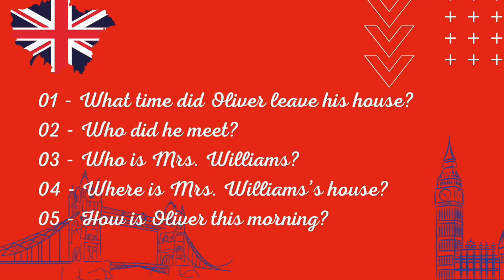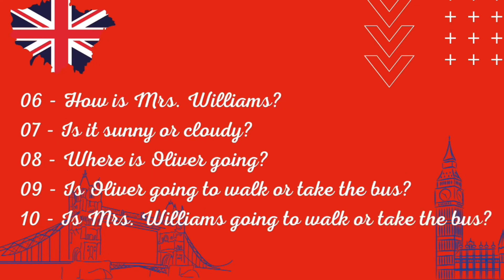One: What time did Oliver leave his house? Two: Who did he meet? Three: Who is Mrs. Williams? Four: Where is Mrs. Williams' house? Five: How is Oliver this morning? Six: How is Mrs. Williams? Seven: Is it sunny or cloudy? Eight: Where is Oliver going? Nine: Is Oliver going to walk or take the bus? Ten: Is Mrs. Williams going to walk or take the bus?